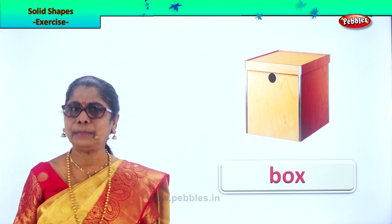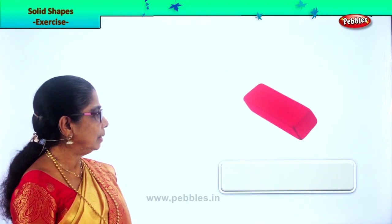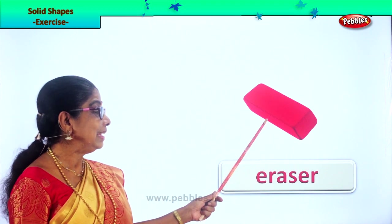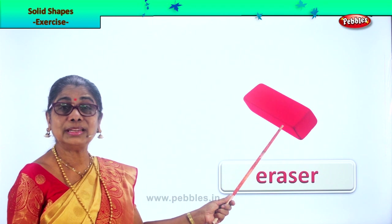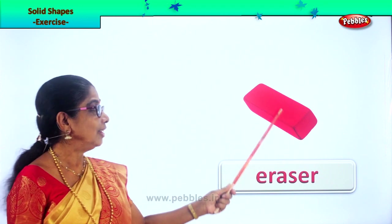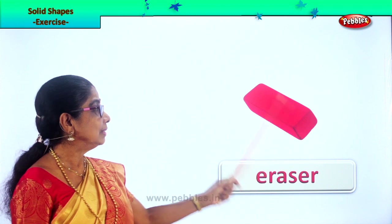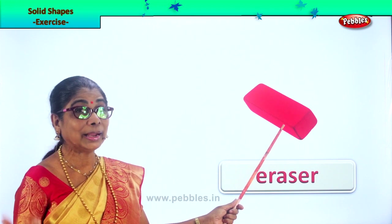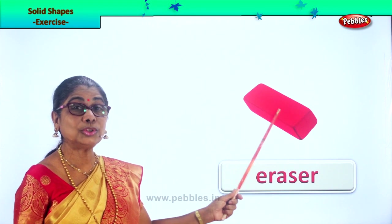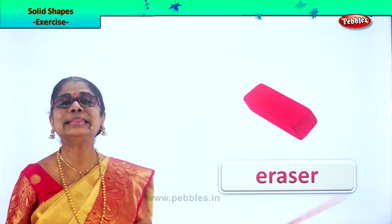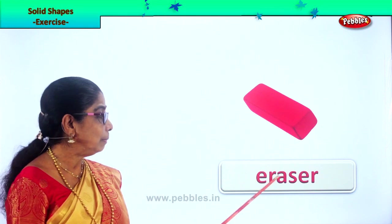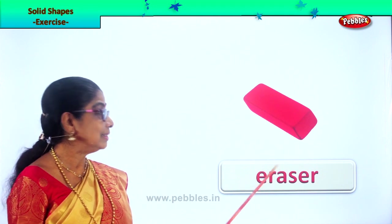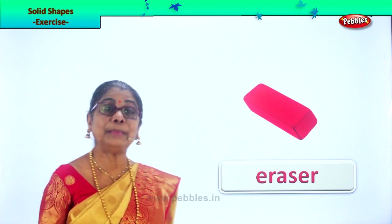Let's look at some more. What is this? You have it in a pencil box — eraser. Yes, an eraser is also the shape of a cuboid. Look at the opposite sides; they are equal, solid. And as you go on using the eraser, it becomes smaller and smaller. So today we learned solid shapes — some of the solid shape examples we saw. This is an eraser, solid shape cuboid.